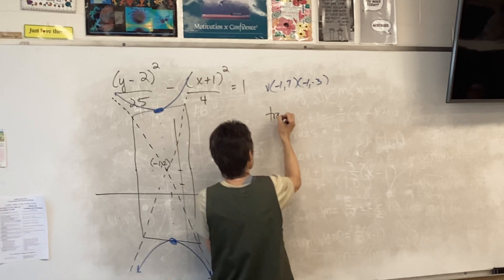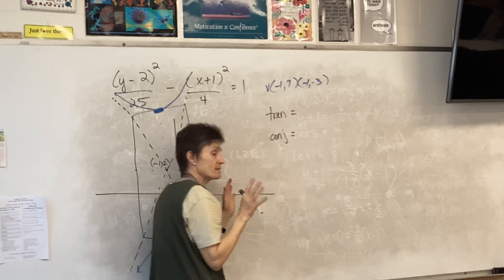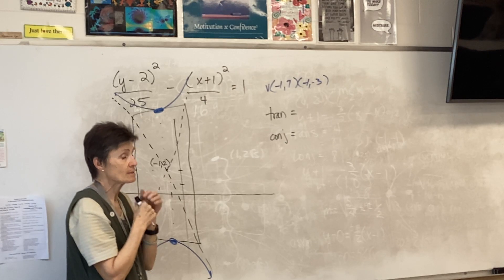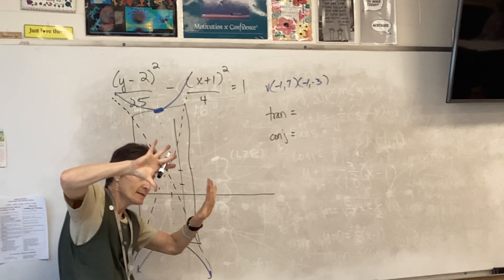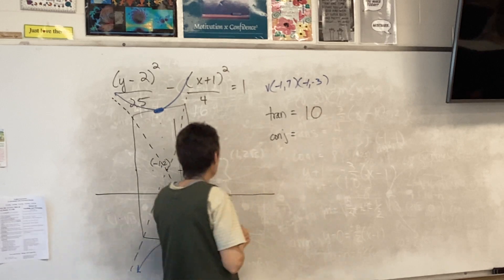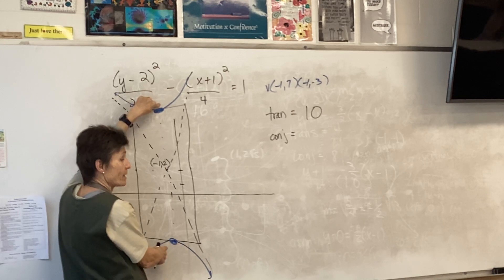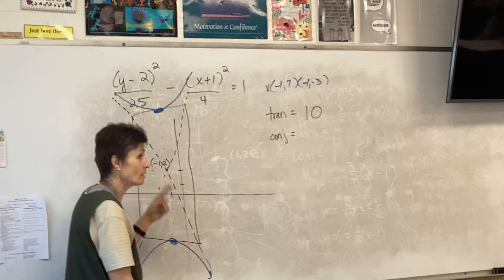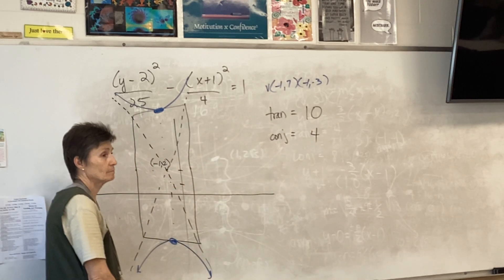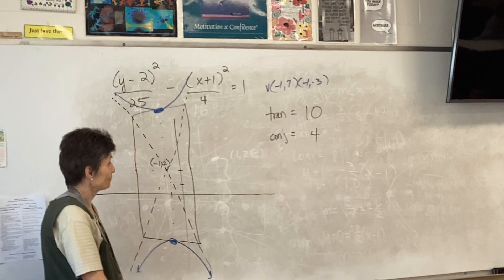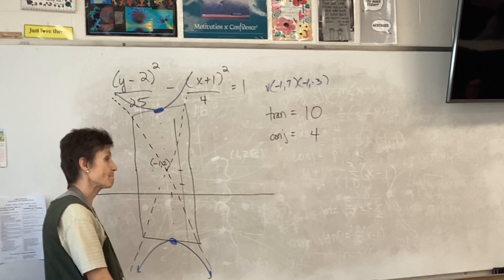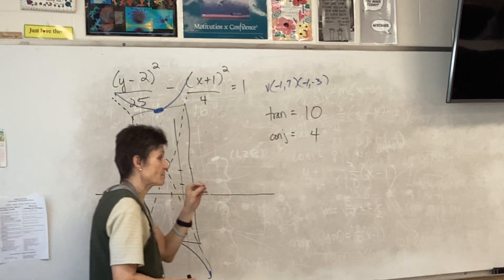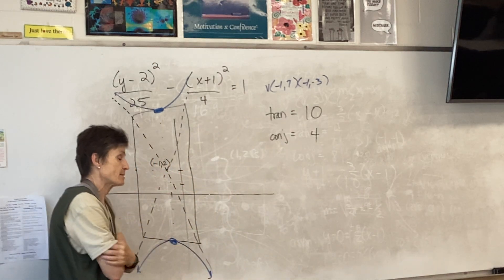Now we're going to find our transverse and conjugate axes. How long is the transverse axis? Count it up and down five, so it's 10. And the other one — the conjugate axis — you count sideways two, so it is four. Does the transverse always stay up and down? No — wherever your vertices are, that's your transverse axis.